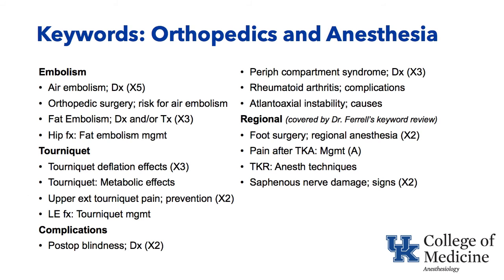These are broken down under the headings of embolism, tourniquet, and some miscellaneous complications. Under embolism, there are air emboli, fat emboli, and thromboemboli. Under tourniquet, there are issues with inflation and deflation, and tourniquet pain. Miscellaneous complications include postoperative blindness usually associated with prone spine surgery, peripheral compartment syndrome, and some issues with rheumatoid arthritis and the airway. Regional topics will be covered by Dr. Farrell in another keyword review.